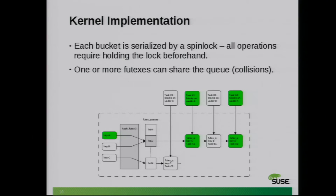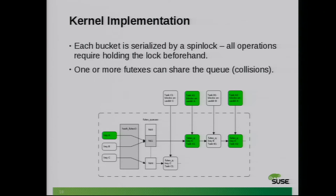In this example you see that on hash bucket one, you have two tasks that are blocked on or operating on the same Futex. And you have task B1, which is totally different on a different Futex, but because of the collision it's serialized with Futex uaddress A.